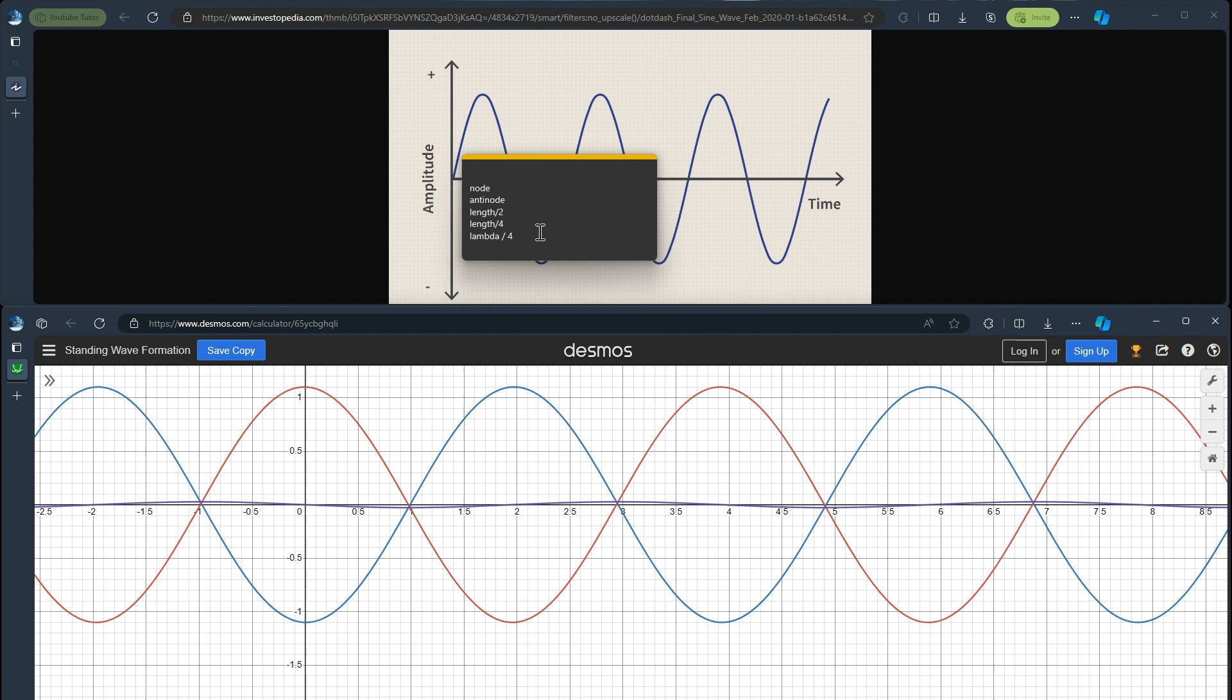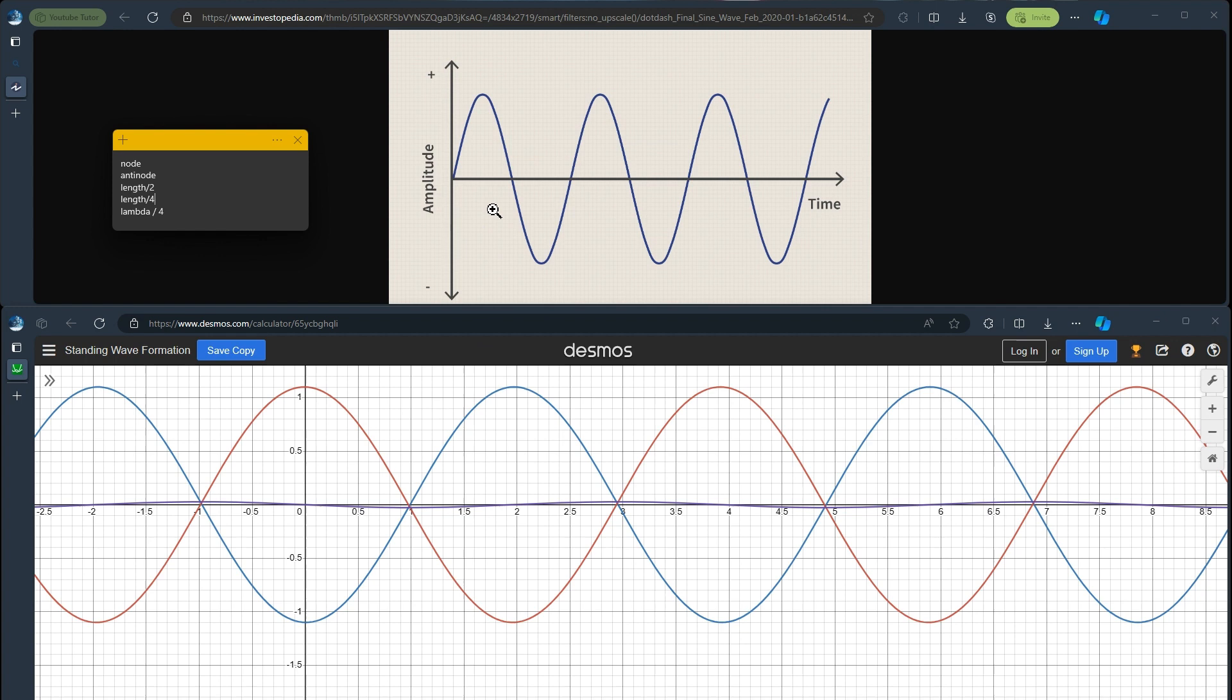In this video, I wanted to tell you about how to identify the wavelength between the normal wave and the standing wave. Just in short, the normal wave is just only one wave, but the standing wave is a combination of two different waves with the same, I think, frequency and period.